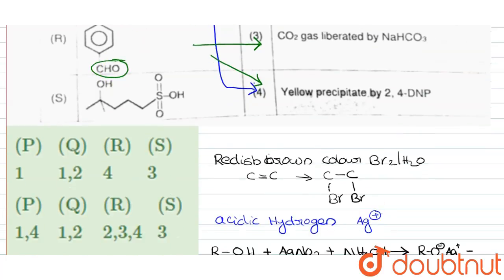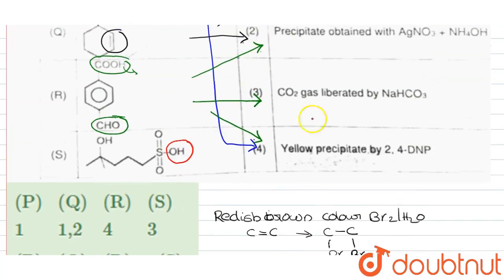And at last, here we have an acidic hydrogen. So this will give positive test with the sodium bicarbonate. So it matches with 3.